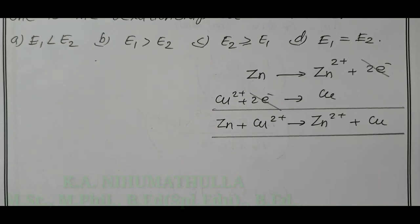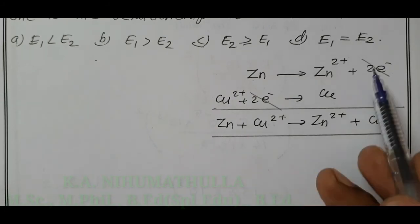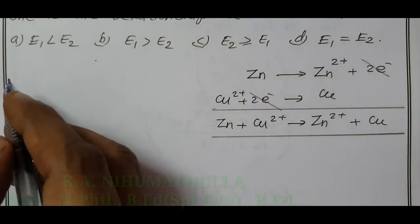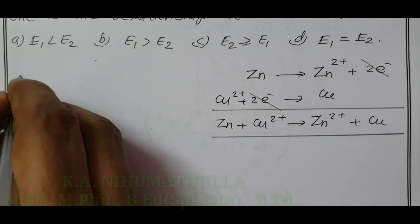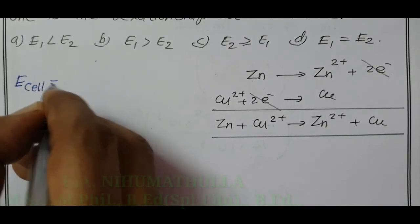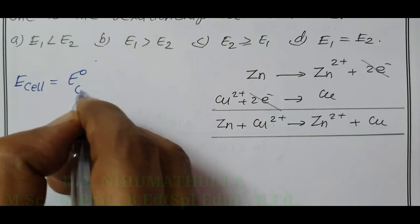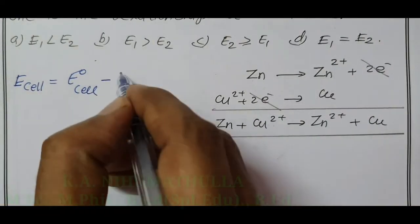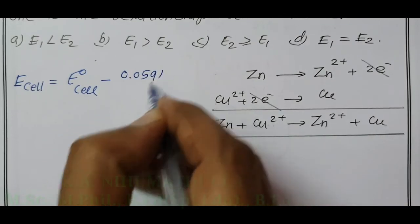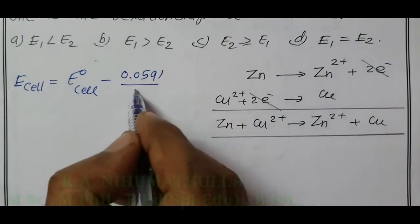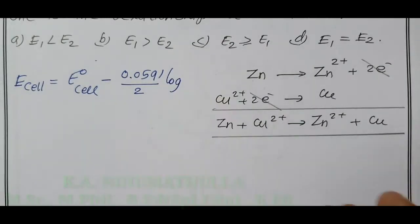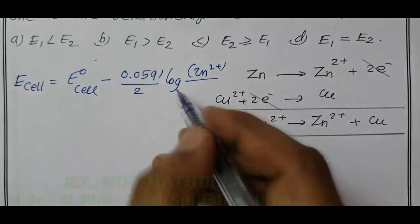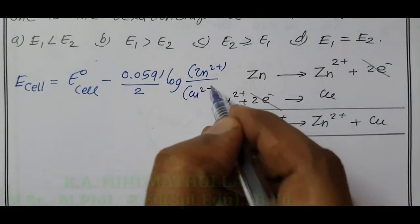We know the Nernst equation. For the Daniel cell, the number of electrons involved is equal to 2. Therefore, we can write the Nernst equation: E_cell = E°_cell − (0.0591 / n) × log([products]/[reactants]). With n = 2, this gives E_cell = E°_cell − (0.0591 / 2) × log([Zn²⁺] / [Cu²⁺]). The concentration of metal is equal to 1.